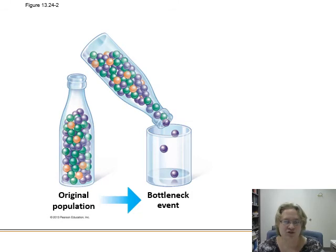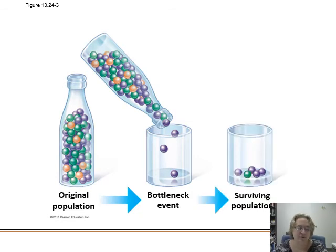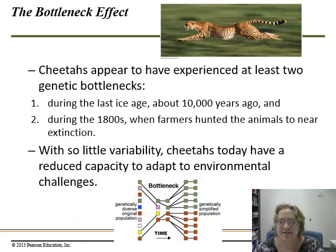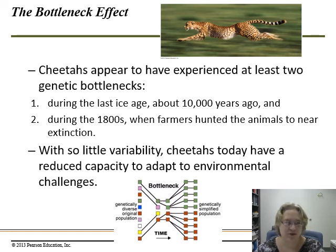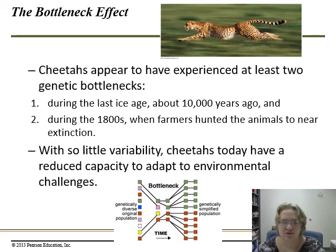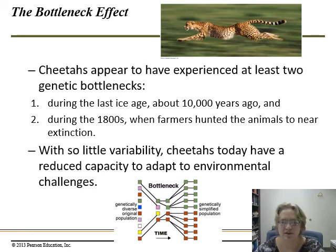During a bottleneck event, only a few individuals survive, and the surviving population may be very different from the original — not through selection or adaptation, just random chance. Cheetahs have gone through at least two genetic bottlenecks: one during the last ice age and another in the 1800s when they were hunted near extinction by farmers. As a result, cheetahs have extremely low genetic variation, significant inbreeding among existing populations, and it remains uncertain whether there will be enough variation for cheetahs to adapt to new climates and environments.